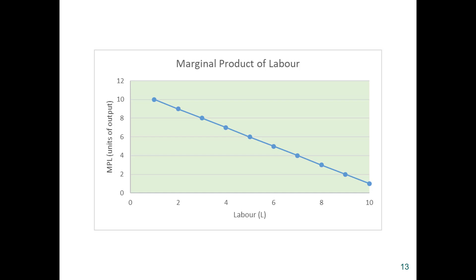The marginal product of labour at each level — say at L equals 2 and L equals 4 — is equal to the slope at that point on the curve of the production function. So here we can clearly see we have a decreasing marginal product of labour. We have diminishing returns to labour.